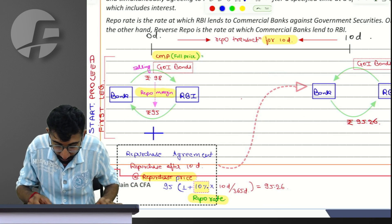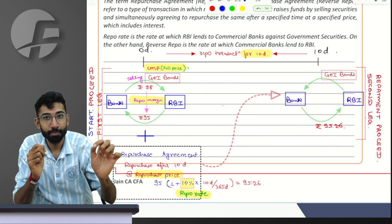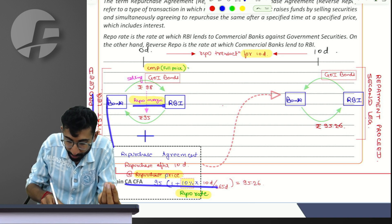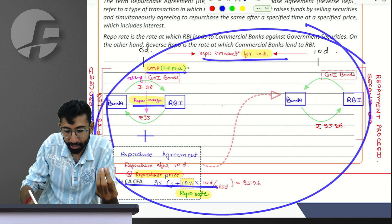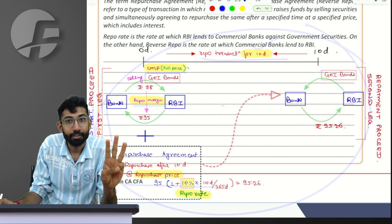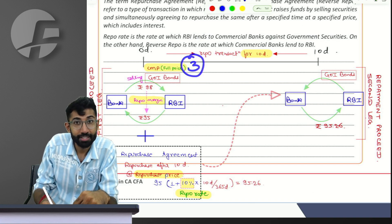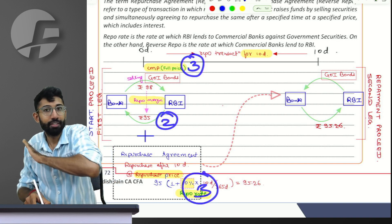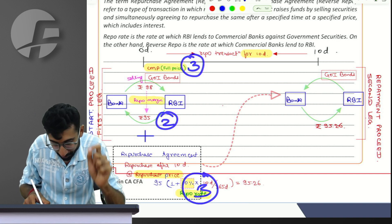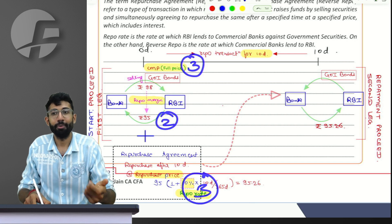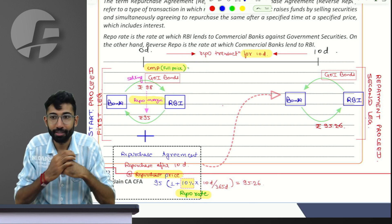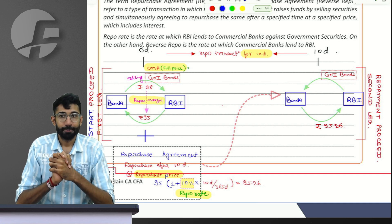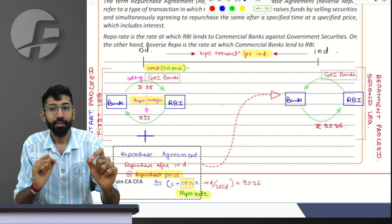Could I convey to you the entire concept? The terminologies: start proceed, repurchase price, repo margin, full price, second leg, repo transaction, duration. And the three calculations involved: clean price to full price, the repo margin, and the interest calculation. That's all that is needed to answer any question on repo in CA Final AFM and CMA Final SFM. How much out of 10 are you people settled? I need a response. Because if you allow me, I would want to take you further.